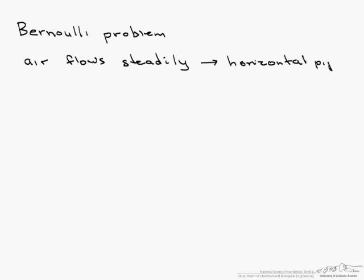This is a relatively simple Bernoulli problem, and what we have is air that flows steadily, so we don't have to worry about a DT term. It is through a horizontal pipe that is 10 centimeters in diameter.